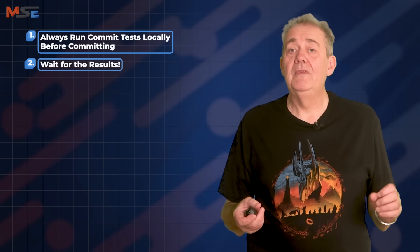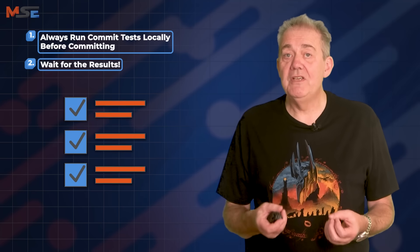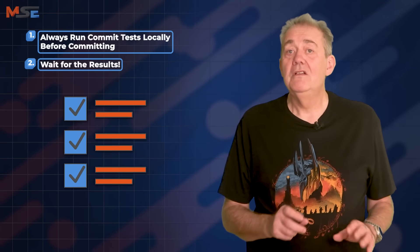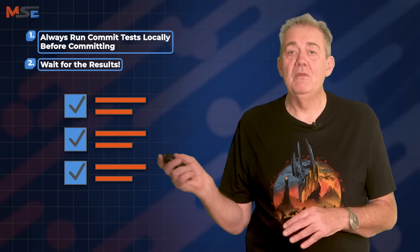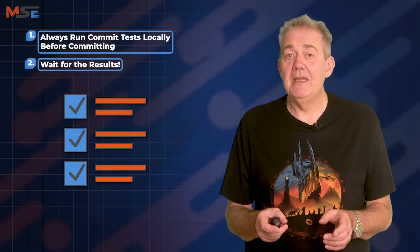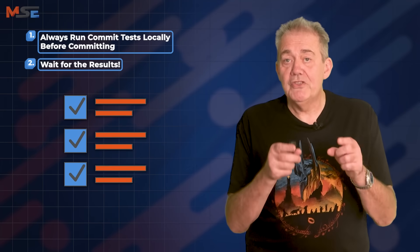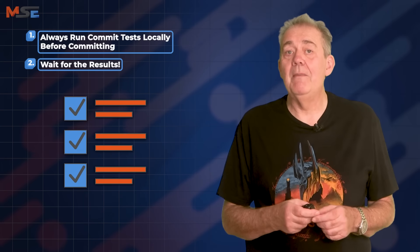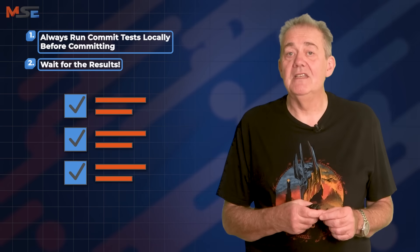Rule two: wait for the results of the commit build. Once you've pushed your code, your job isn't over — you wait for the build results. Don't wander off to a meeting, lunch or the restroom. If something breaks, you must be the first person to know about it and fix it. That's why I recommend keeping continuous integration build times to under five minutes.